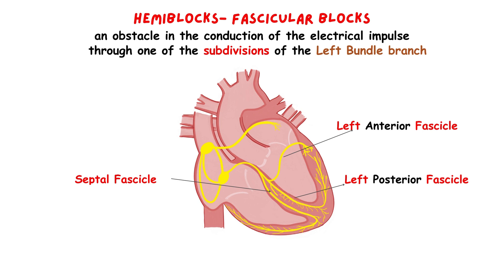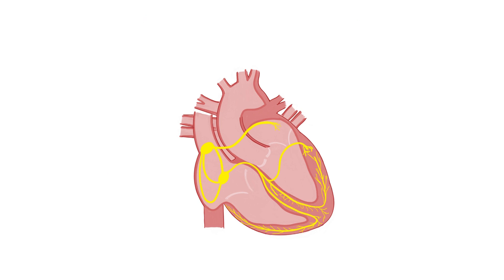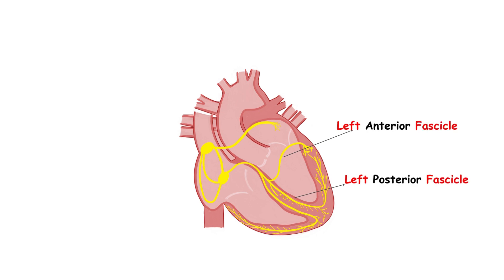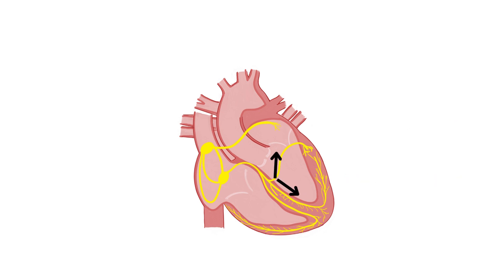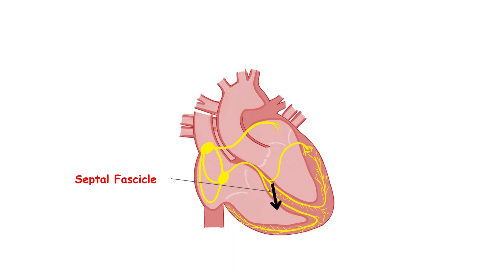How are we going to detect a fascicular block on the ECG? In normal conditions, when the conduction through the ventricular conducting system proceeds smoothly, the depolarization wave travels simultaneously through all of the fascicles at the same time. At the beginning, because the anterior and the posterior fascicle branch out almost in the opposite direction and the depolarization wave travels in opposite directions, the electrical vectors are cancelling each other out. So the initial vector of depolarization depends only on the septal fascicle. The impulse through the septal fascicle is conducted from the left side to the right side of the septum, which, because of the anatomical position of the heart, is pointed downward.